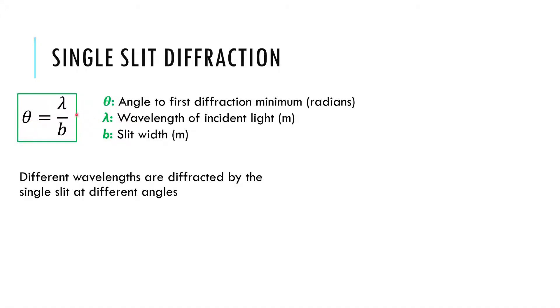Lambda is, as always, the wavelength of the incident light, the light coming into the slit, and b is the width of the slit, the size of the opening.